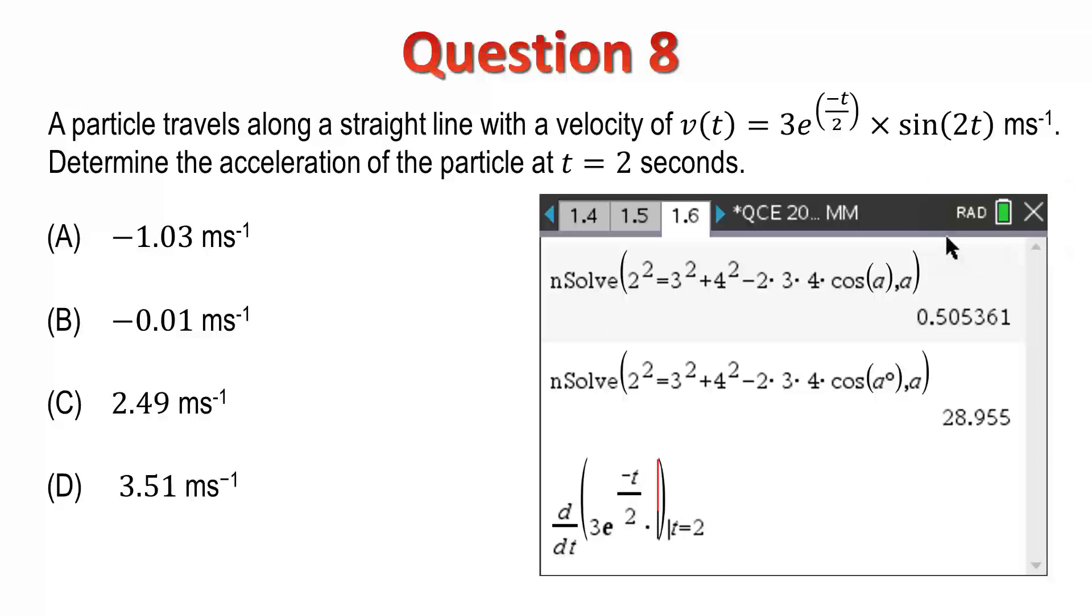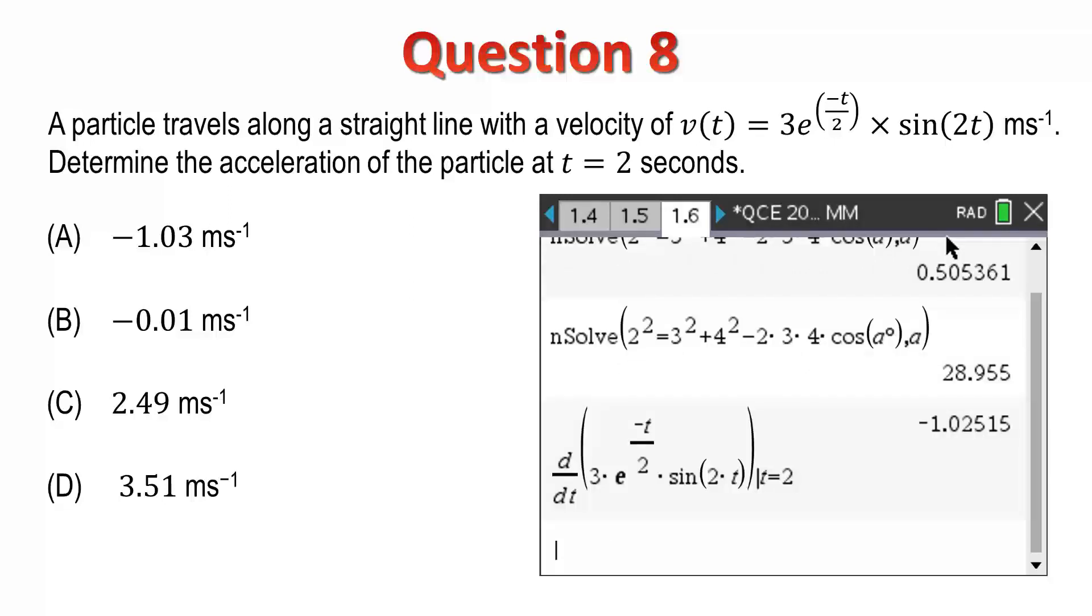The derivative of 3e to the negative t over 2 by sin 2t at t equals 2 is equal to negative 1.03 m per second. So, I'll select option A.